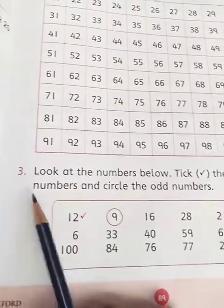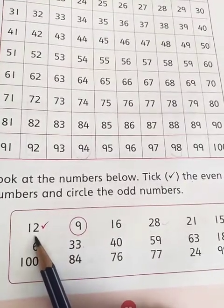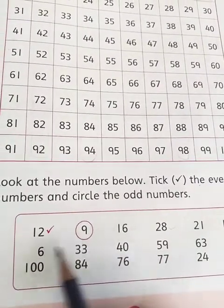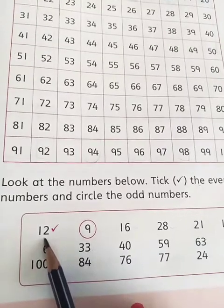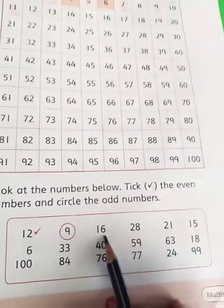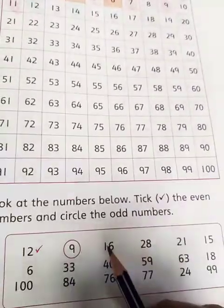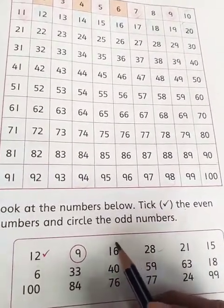Now question number 3. Look at the numbers below. Tick the even numbers and circle the odd numbers. 12 is an even number. 9 is an odd number. So 12, we have put a tick on it. And on 9, we have made a circle. Now 16. What about 16? 16 is colored with blue. So it is even number. And we will tick on it.